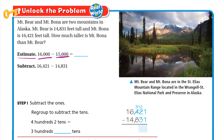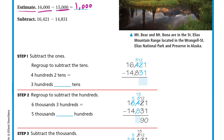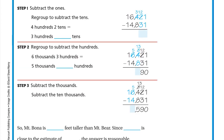So we have sixteen thousand minus fifteen thousand, which is one thousand. The actual difference will be around one thousand. Now let's subtract: 16,421 minus 14,831. Remember to align the digits by place value — ones under ones, tens under tens, hundreds under hundreds, and so on.